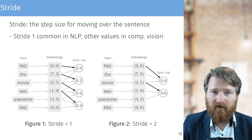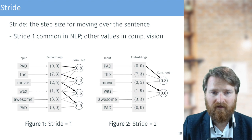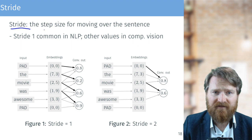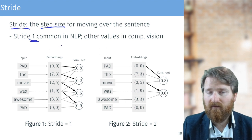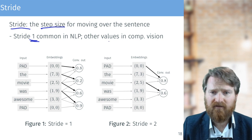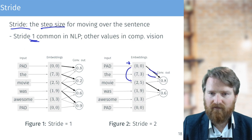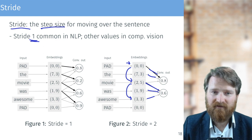So far we've been moving the window just by one step at a time. This is parameterized by something called stride — the step size for moving the window over the input or sentence. A stride of size one is common in NLP. In computer vision you might use different strides — for example stride two means you start, compute a convolution, then move by two positions rather than one. In NLP we basically take every position, so stride of size one.